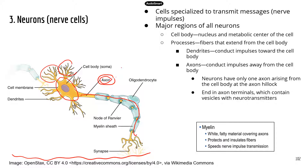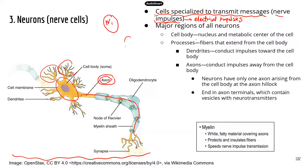These neurons are specialized cells to transmit messages, and those messages are in the form of nerve impulses — electrical impulses. However, when the signal transmits between two neurons, let's say neuron 1 and neuron 2, when the signal gets between two neurons it will become a chemical signal.